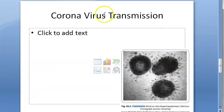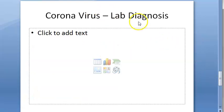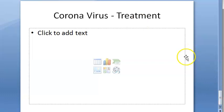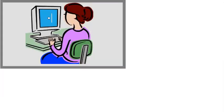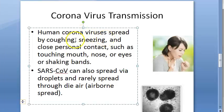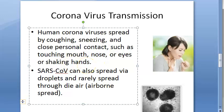Let us look at the transmission of coronavirus. They spread by coughing, sneezing, personal contact, touching mouth, nose, eyes, and shaking hands — all these can be modes of transmission. SARS coronavirus also spreads via droplets and through air — airborne spread can also happen.